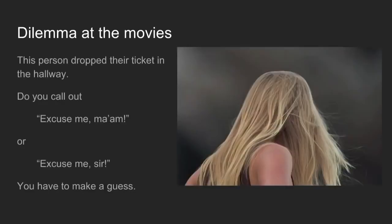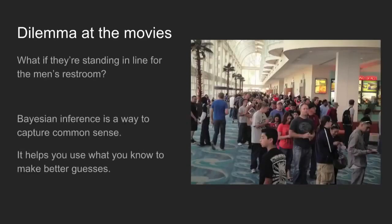To illustrate it, imagine that you're at the movies and someone drops a ticket. You pick it up, and you can see them from behind. You know they have long hair, but you don't know whether they're a man or a woman, so you have to make a guess. Based on what you know about the attendees at your movie theater, you might say, 'Excuse me ma'am, is this your ticket?' Now imagine instead that this person is standing in line for the men's restroom. Knowing this extra piece of information, you might make a different guess. Bayesian inference is a way to capture this common sense knowledge about the situation and help you to make better guesses.